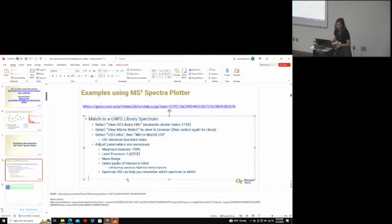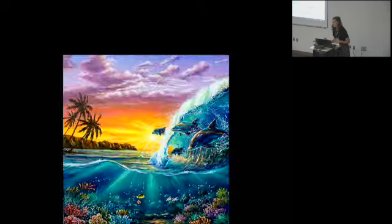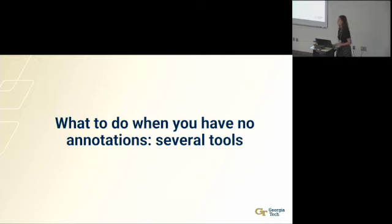That was a case in which we do have an annotation — a match to a library. What do you do when you don't have a library match? There are several tools that we like to use. These are tools based on in silico methods. In silico refers to an operation performed by a computer. If it's an in silico spectrum, a computer used some algorithm to predict that spectrum. And all in silico spectra should be further verified.